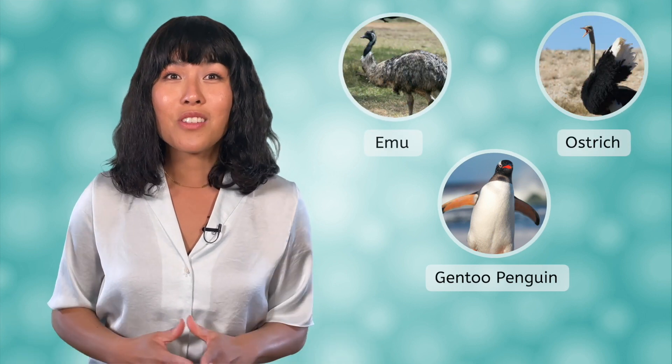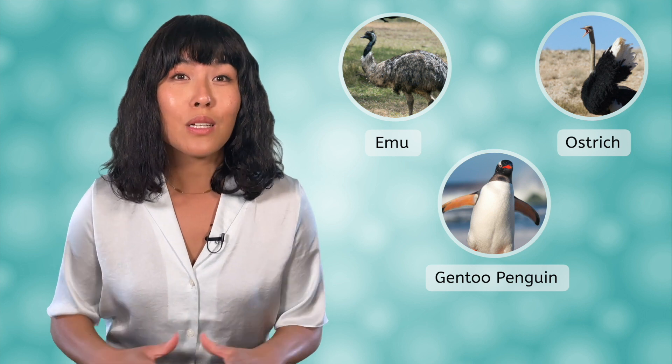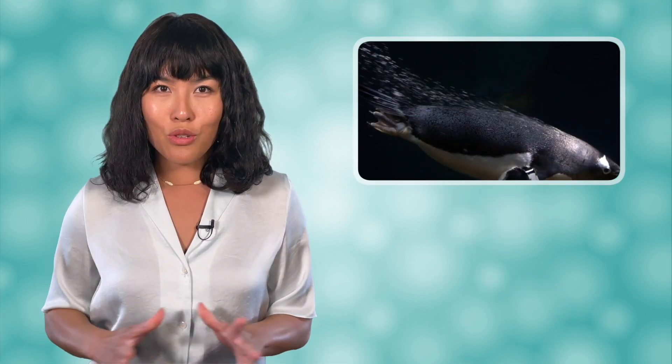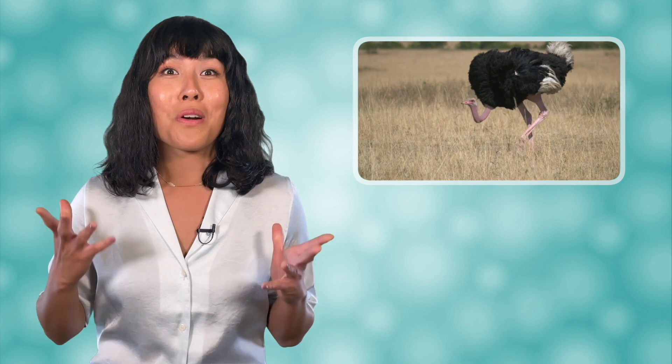You might be wondering, what about the birds that don't fly? Penguins, ostriches and emus are just a few examples of birds that don't fly. But their wings still provide important anatomical functions. Penguins use their wings for swimming, ostriches use their wings for courting, and emus use their wings for steering when they are running at top speed which can reach over 30 miles per hour.